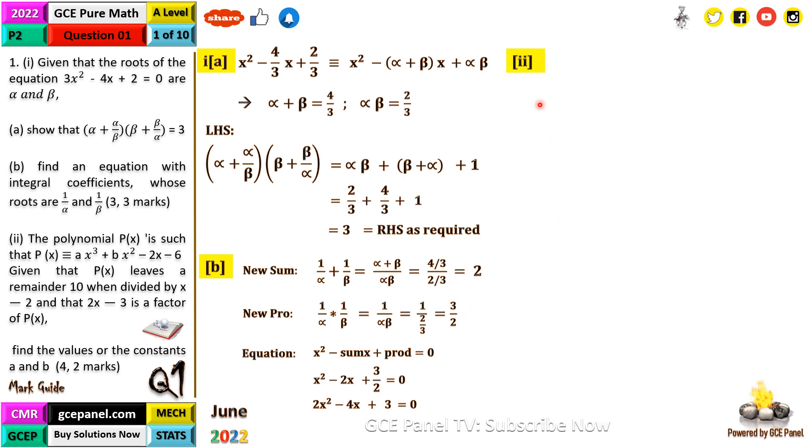We're in the world of polynomials. When you divide by x - 2, the remainder is 10. We equate x - 2 = 0, so x = 2. This implies P(2) = 10. Substituting 2 into the equation: 8a + 4b - 4 - 6 = 10, which simplifies to 8a + 4b = 20. We call this Equation 1.